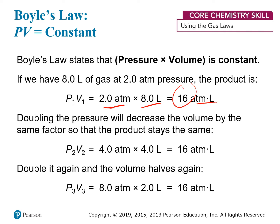If we take this same sample of gas and double the pressure on it — so now the pressure is 4 atmospheres instead of 2 — that causes the volume to decrease by half, going from 8 liters down to 4 liters. When you take the new pressure and new volume and multiply them together again, you still get the same number as originally. The product stays the same as long as the temperature and number of particles stay the same.